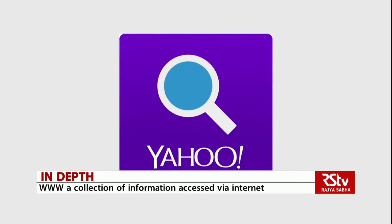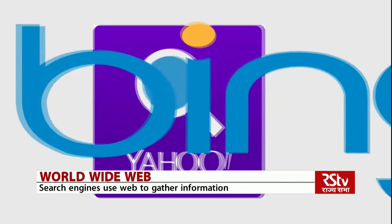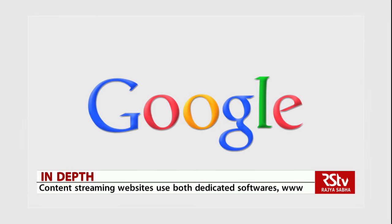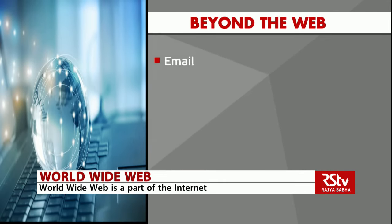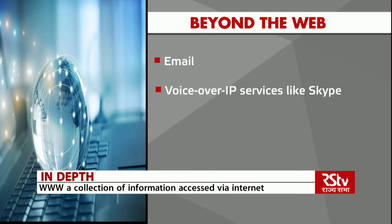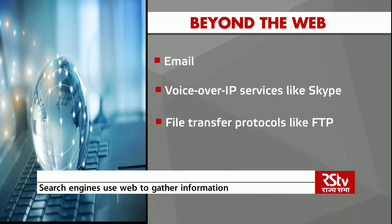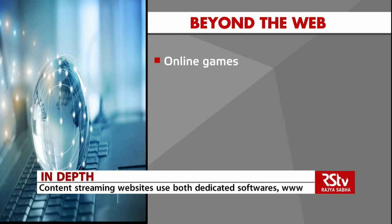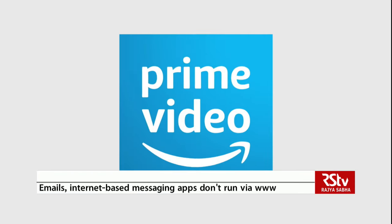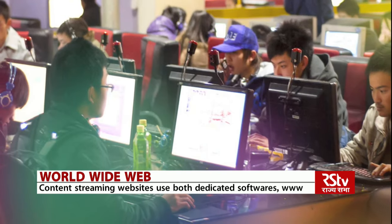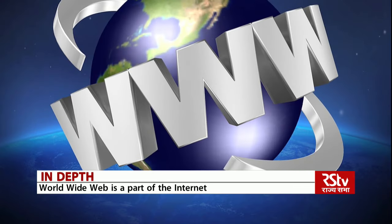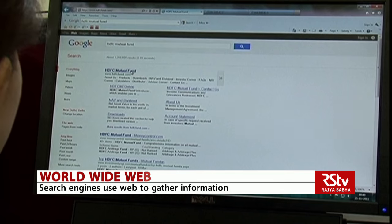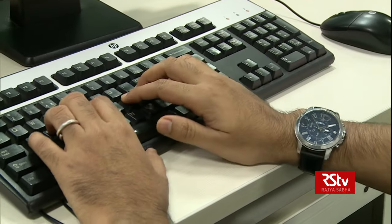While search engines make use of the World Wide Web to provide needed information, not everything you do online is viewed via the web. This includes email, VoIP services like Skype, file transfer protocols like FTP or BitTorrent, and video streaming services like Netflix when not viewed in a web browser, as well as online games like World of Warcraft. Content streaming websites like Netflix often use dedicated software and service-specific streaming protocols that traverse the internet. However, when you view content in your web browser on your PC, the content is delivered over the web.